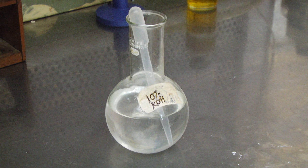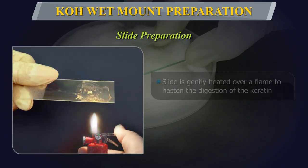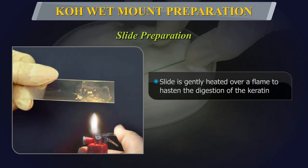Caution: As the potassium hydroxide agent is corrosive, it should be handled with care. The slide can be gently heated over a flame to hasten the digestion of keratin. However, avoid overheating as it may result in crystallisation of the slide material. While using DMSO, heating is not required.